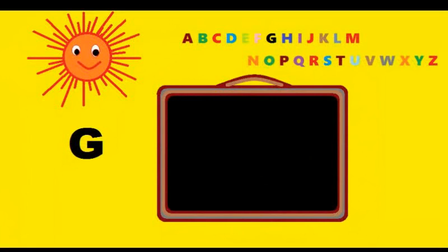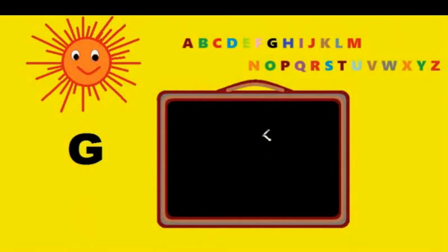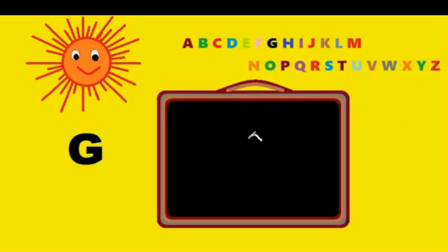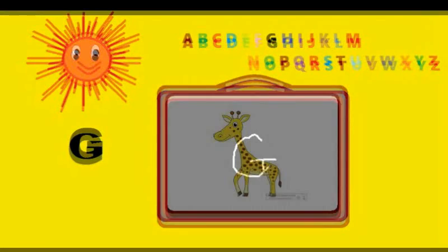Next letter is G. We can go around the corner and take it up, in and out, and you can take the line down. You can go around the circle and draw a small T into it. That's G. G is for giraffe.